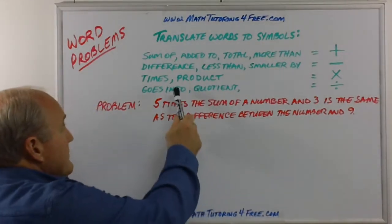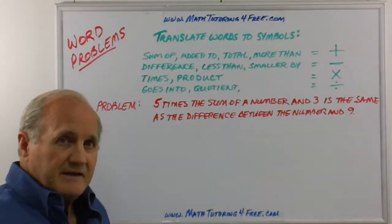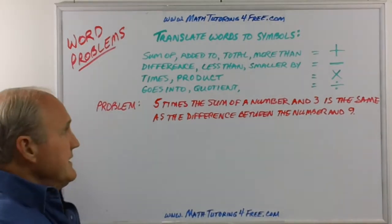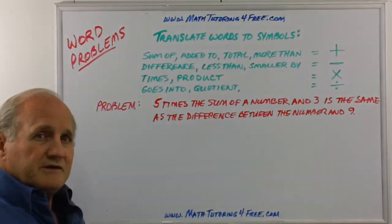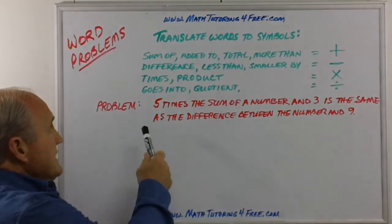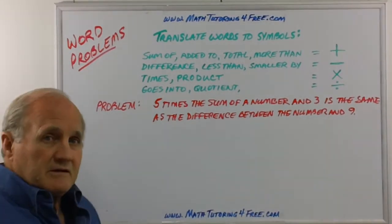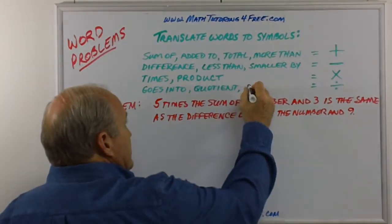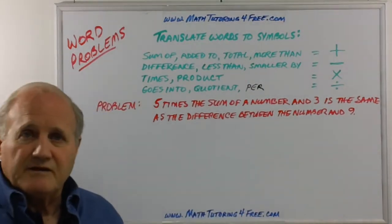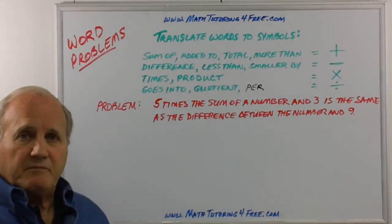Words like difference, less than, smaller by, these all indicate that we're probably going to need to subtract. Times, obviously multiplication, the product of something. Product means multiplication. Quotient, goes into, also a lot of times they'll say something is two per five hours or three per package. That kind of thing you can think division.